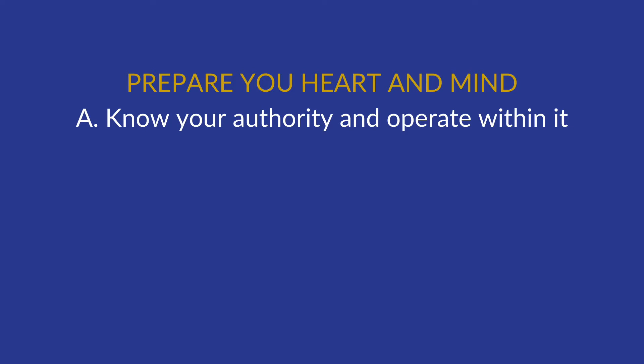Step 1A: Know your authority and operate within it. Do you have the authority to bring Corrective Discipline, or should it be referred to your oversight? If you are authorised, operate within the sphere of your authority with confidence. Depending on the nature of the issue, it is always wise to let your immediate oversight know what is happening. You may not initially mention names, but seek counsel or advice.